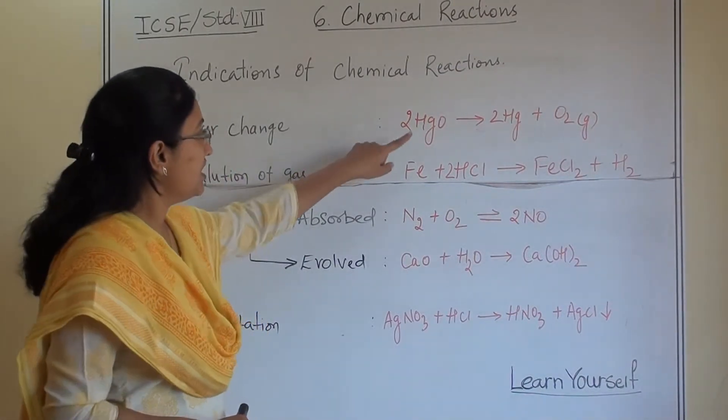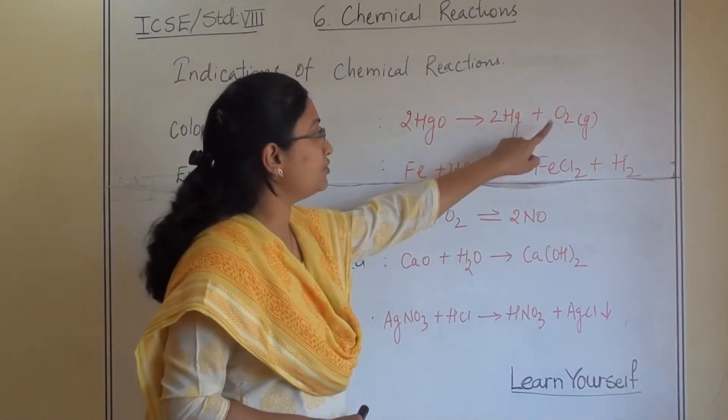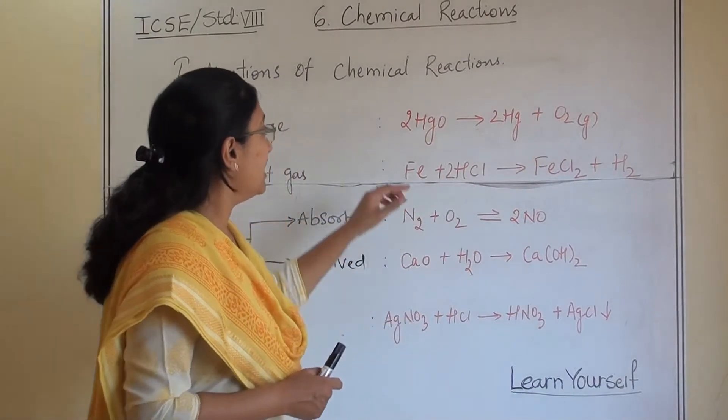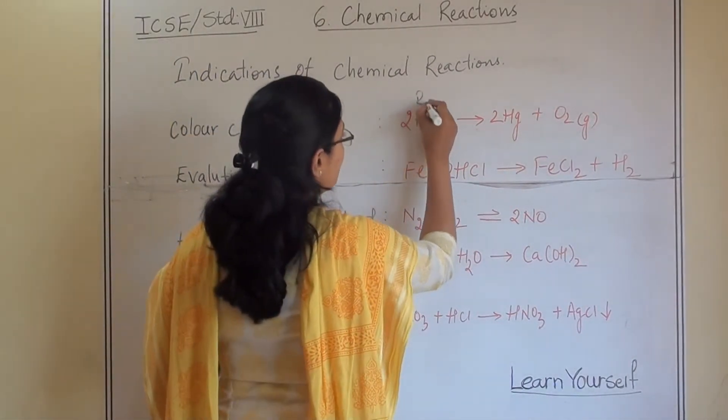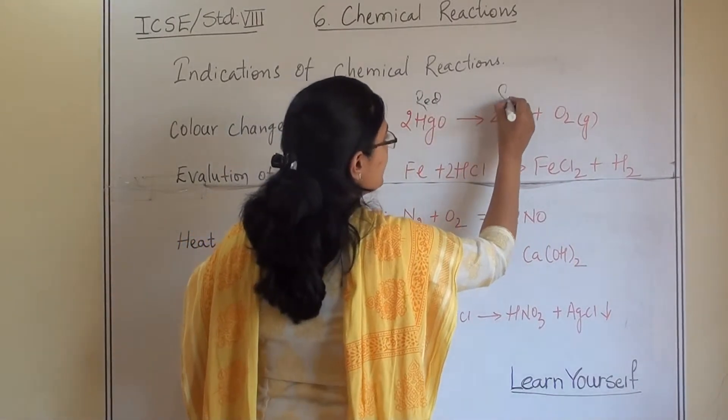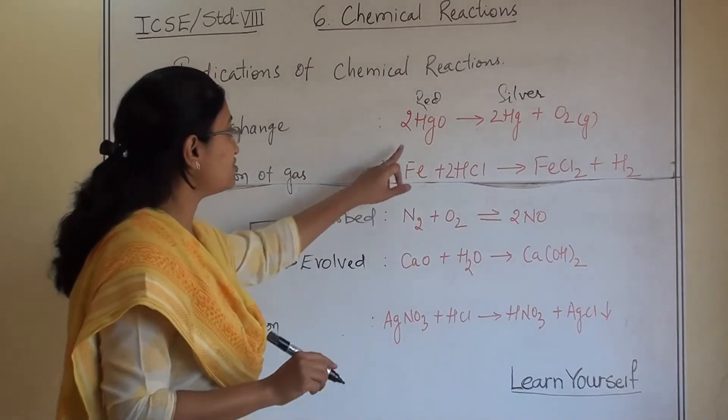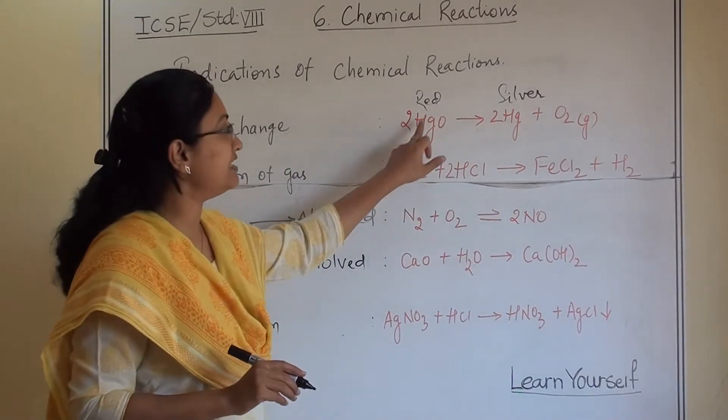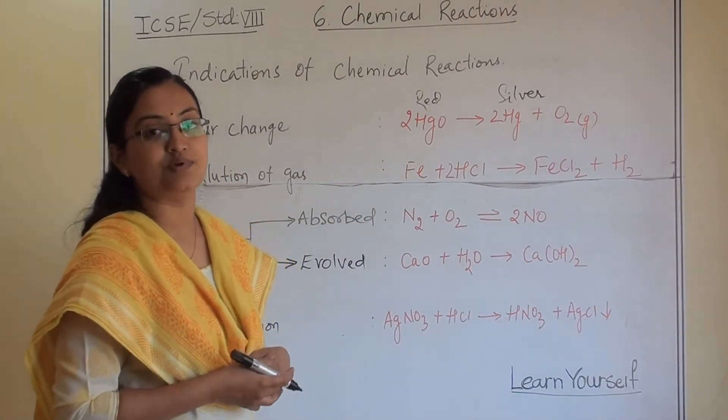First, color change. Mercury oxide when you are heating it, you will get mercury and oxygen. Earlier it is red in color, and after the product you will get silver product at the end. So this is a color change. When red is completely becoming silver, we will get to know that our reaction has been completed.